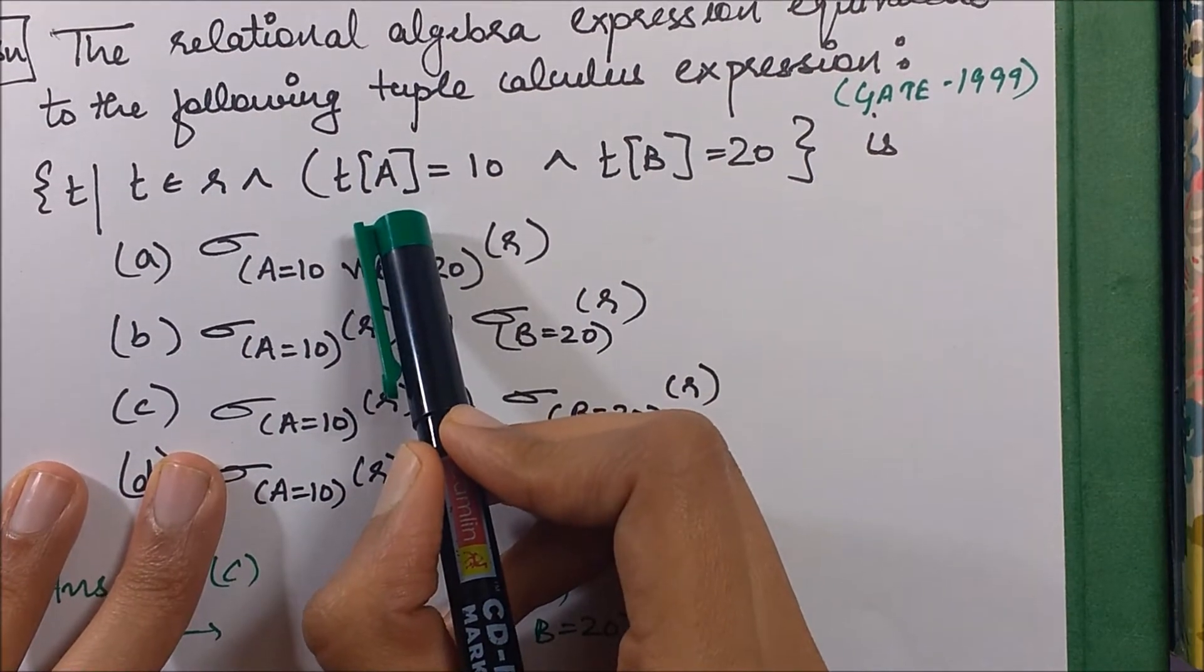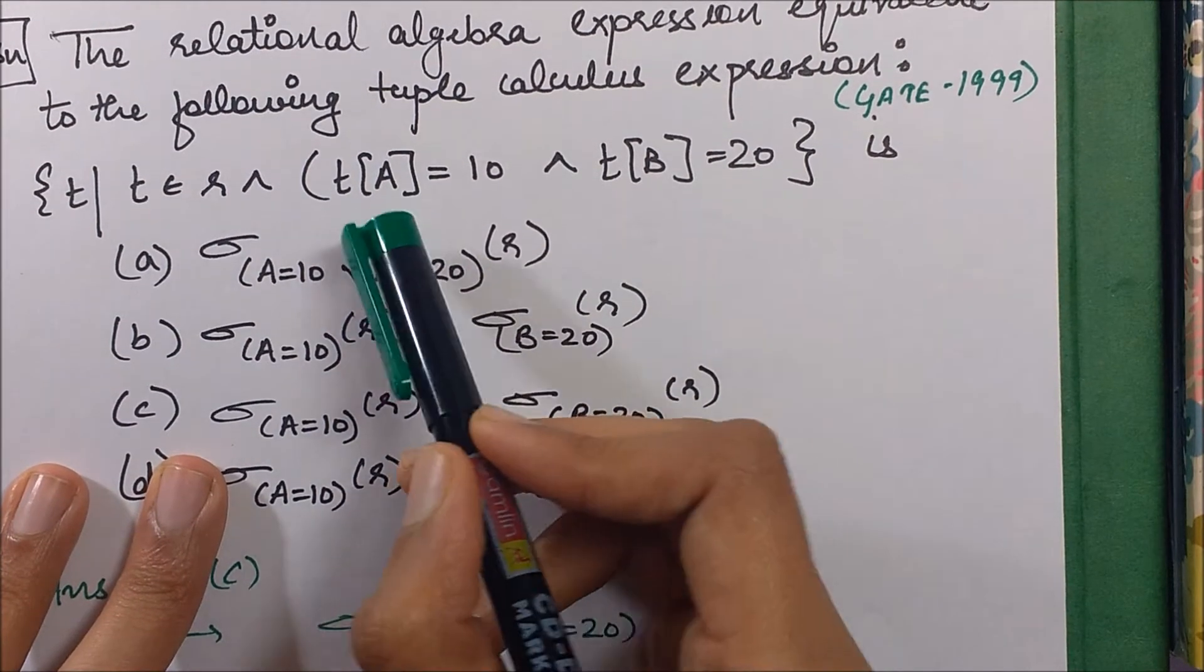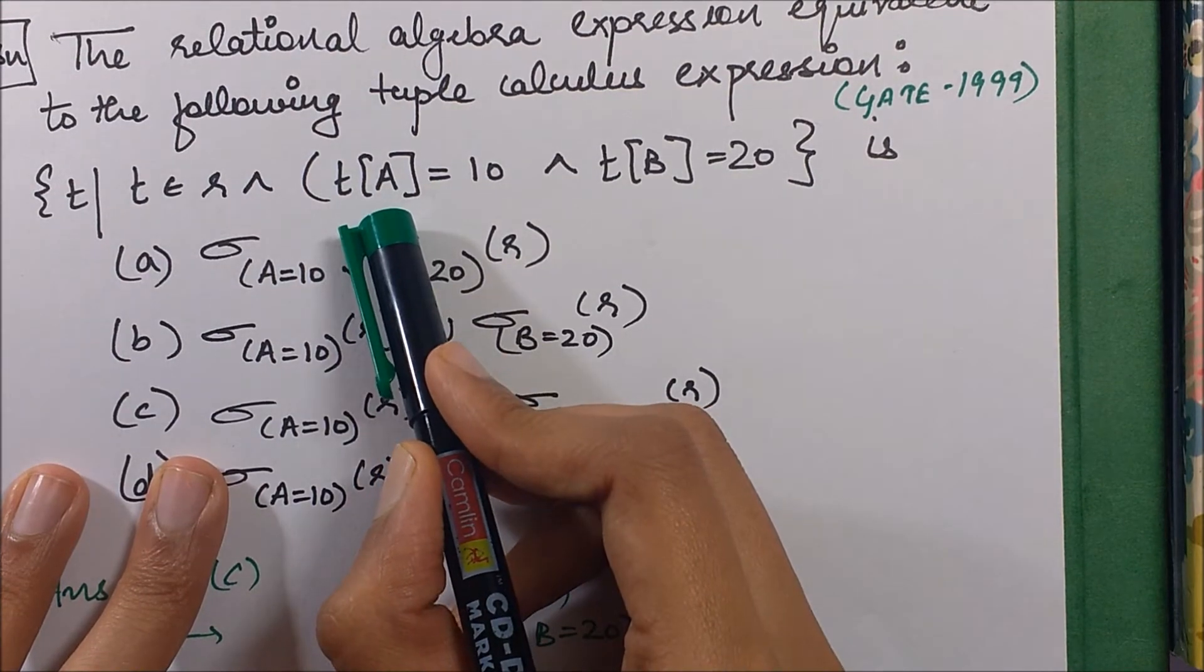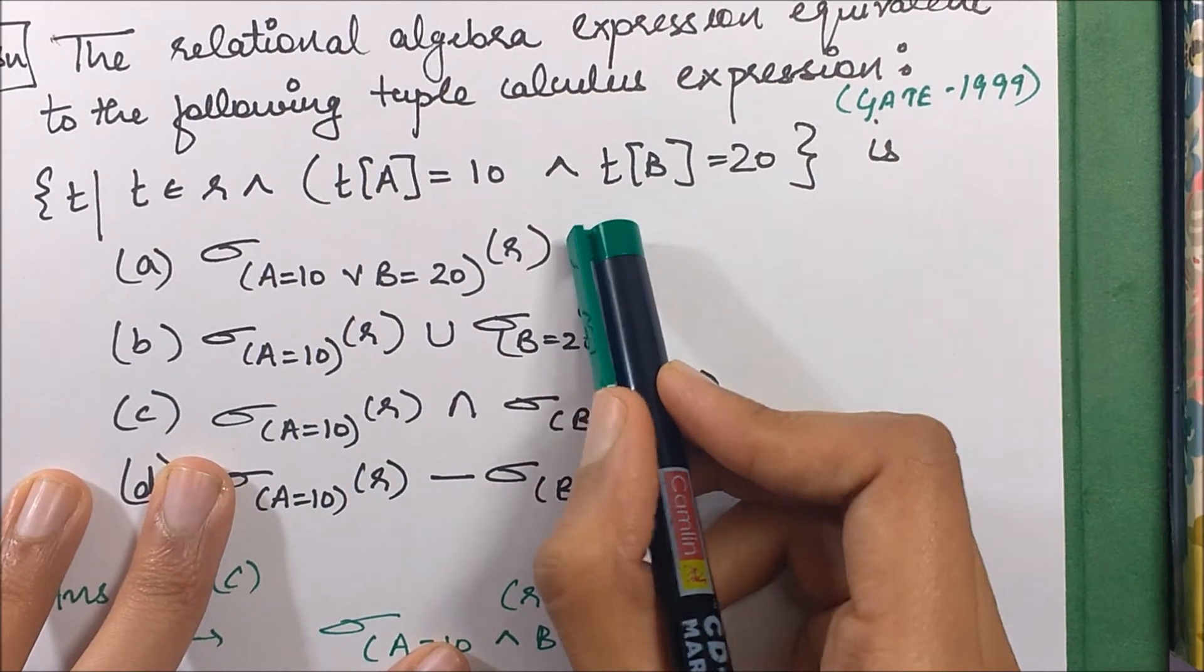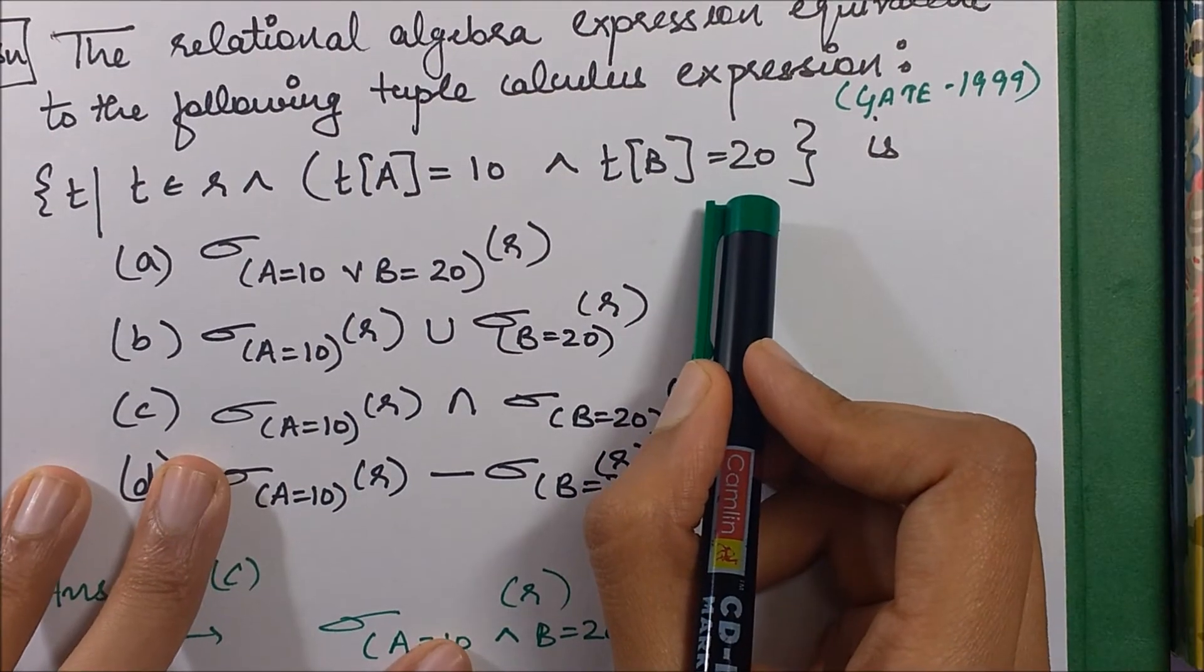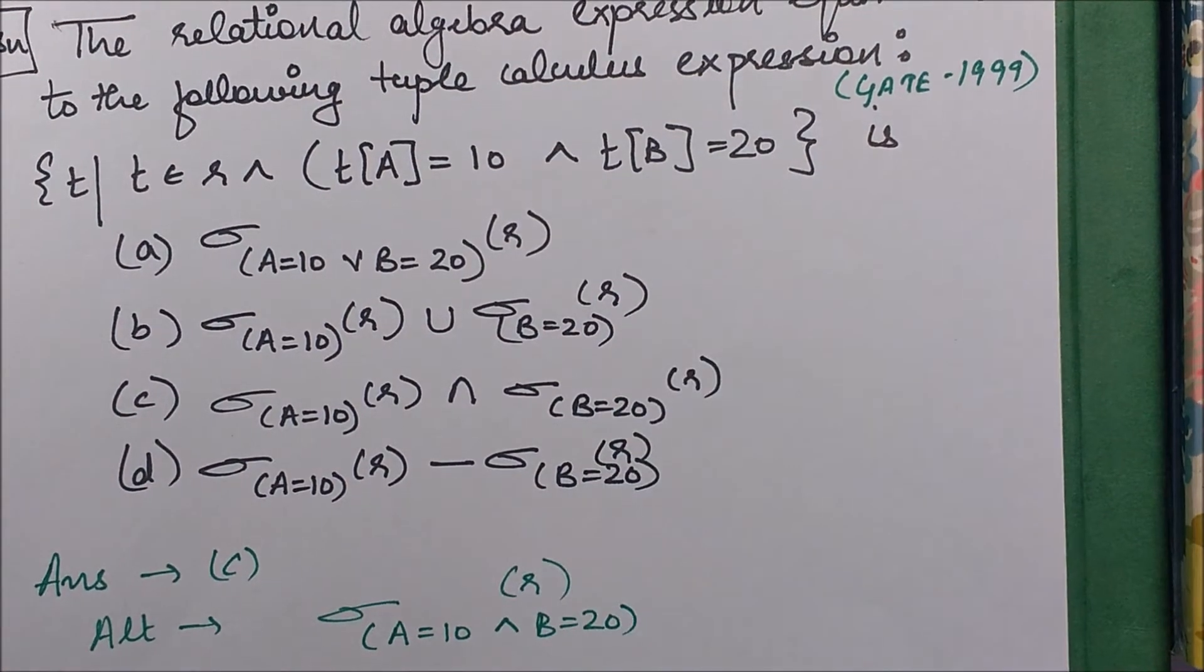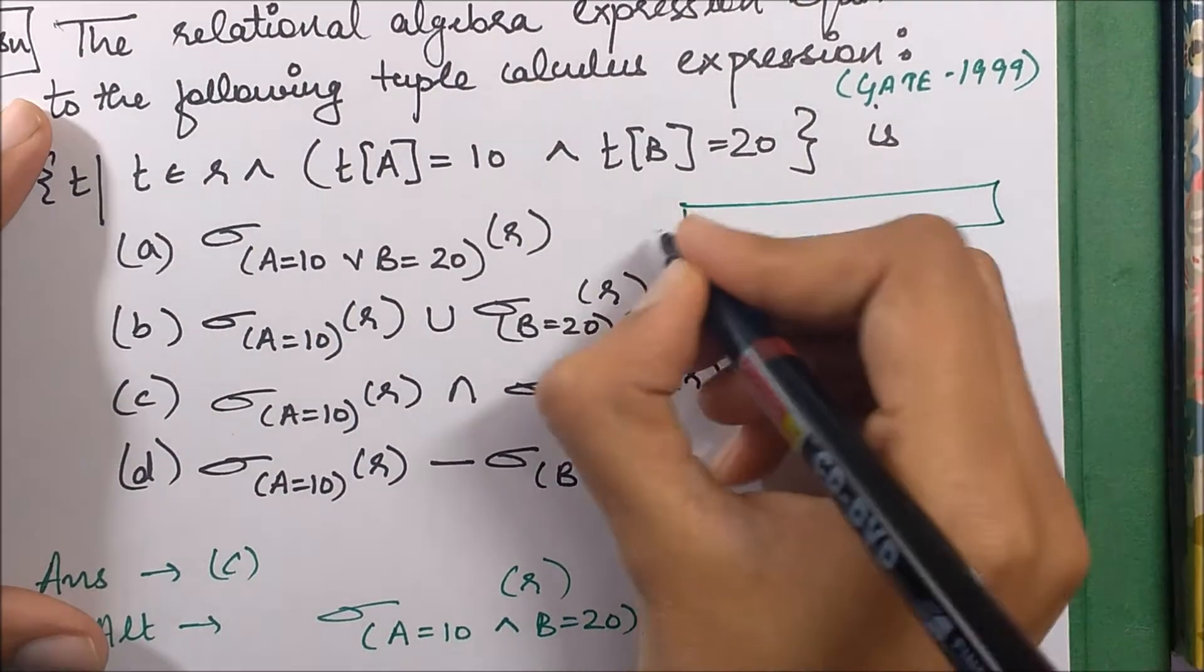This may be some attribute of t. So tuples with attribute a's value as 10, and they have attribute b's value as 20. So I need basically a tuple t where a's value is 10 and b's value is 20.